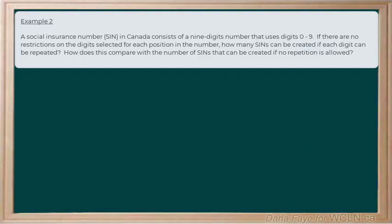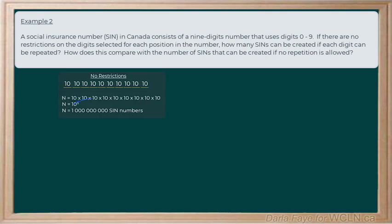So, the question asked us to compare the two. If one billion are possible if repetition is allowed, and we've got just over three and a half million that can be created if repetition is not allowed.